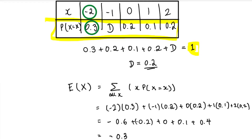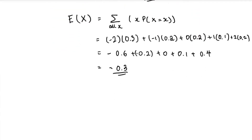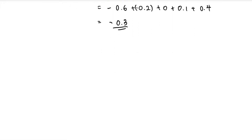So the expectation of x in this case is negative 0.3. Expectation basically means: when all the different events are occurring, what is the sum total of all the different probabilities combined? It gives you the expected value across the entire distribution.